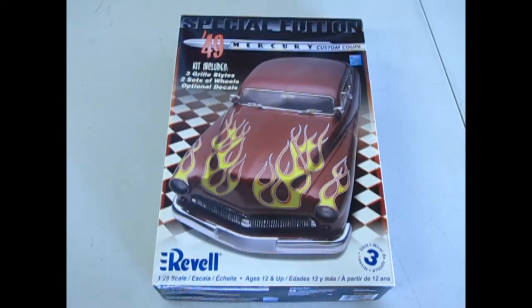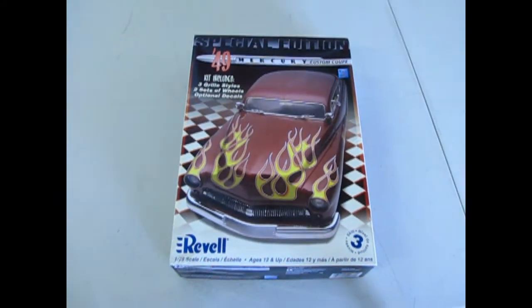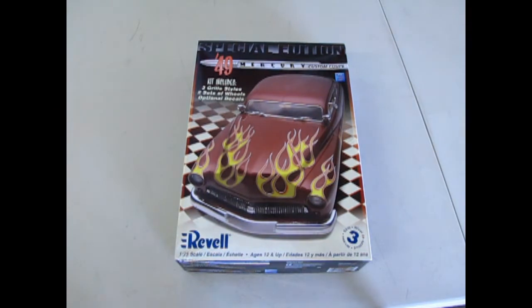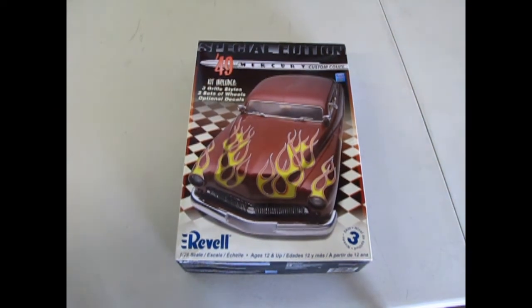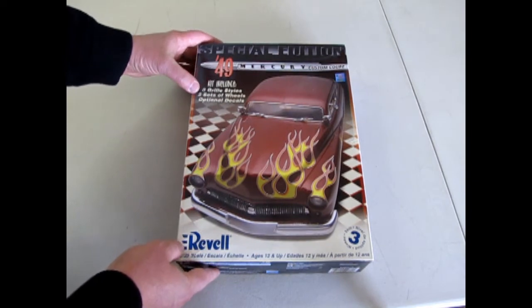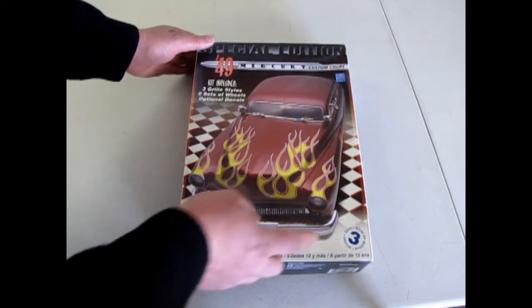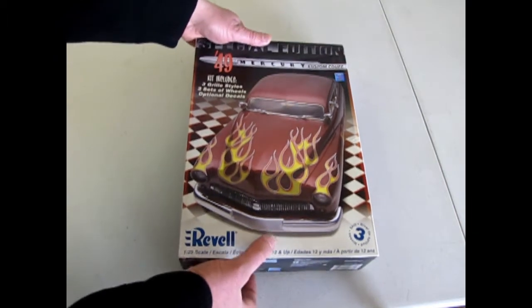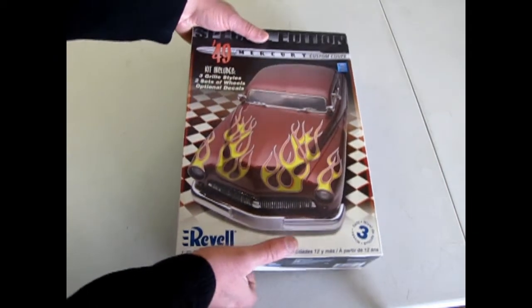Cool customs of a bygone era coming up here as we look at Revell Monogram's 1949 Custom Mercury Kit. This one is pretty cool because they give you three grille styles, two sets of wheels, and optional decals. It's a skill level 3 kit, definitely for the more advanced model builder.